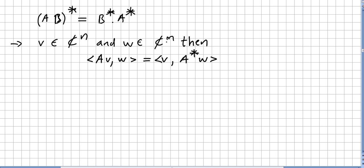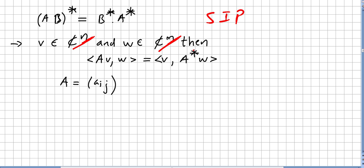If v is in ℂⁿ and w is in ℂᵐ, then for the matrix A, the inner product ⟨Av, w⟩ equals ⟨v, A*w⟩, where A* is the conjugate transpose. Please mind the dimensions here. This uses the standard inner product on these spaces — please check a previous video for that.